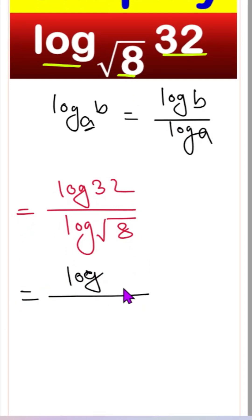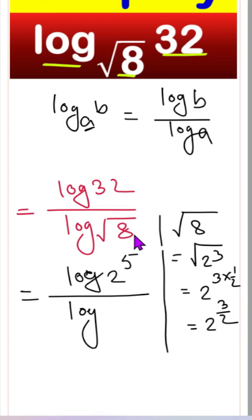For 32, we can write 2 to the power 5. For root 8, we can simplify: root 8 is 8 to the power 1/2, and 8 is 2 to the power 3, so this is 2 to the power 3 times 1/2, which means 2 to the power 3/2. So for root 8, we can write log 2 to the power 3/2.